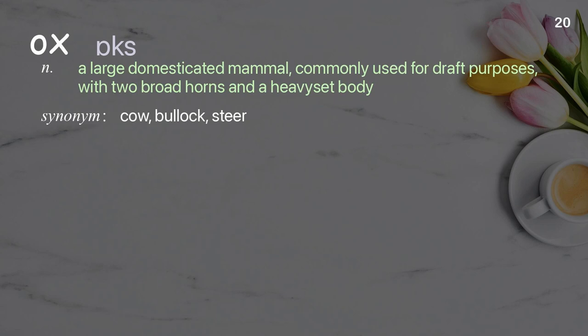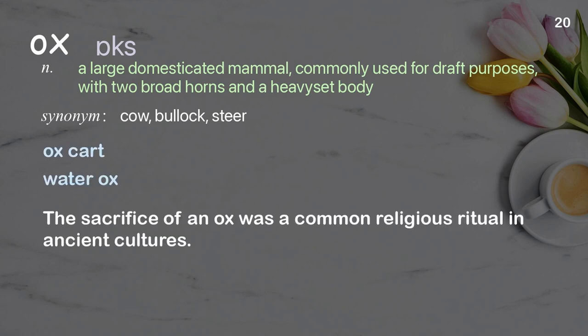Ox: A large domesticated mammal, commonly used for draft purposes, with two broad horns and a heavyset body. Examples: Ox cart, water ox. The sacrifice of an ox was a common religious ritual in ancient cultures.